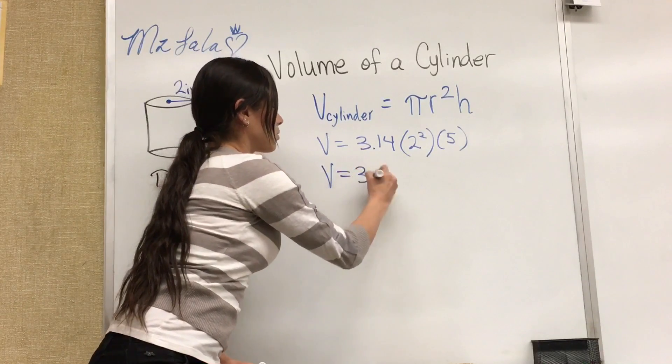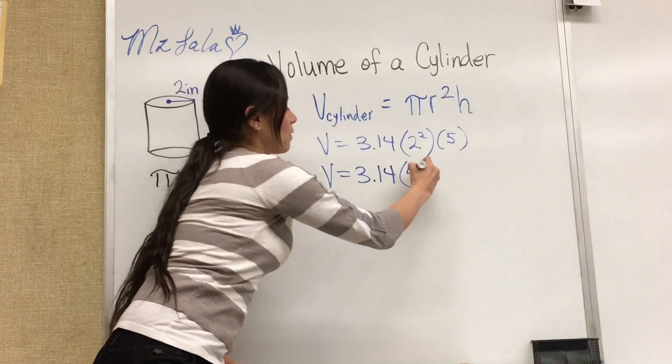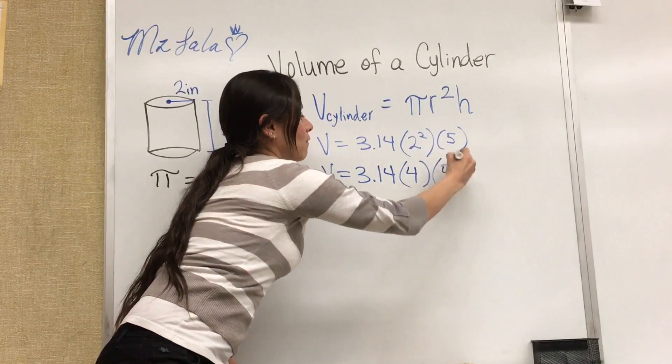So this would be volume equals 3.14, 2 times 2 that would be 4 times 5.